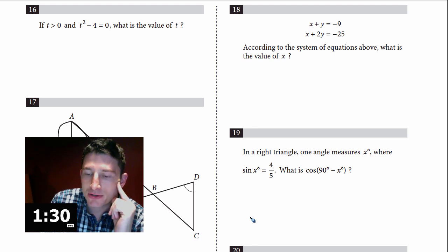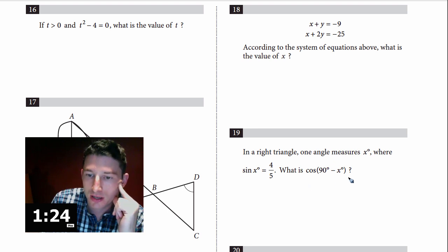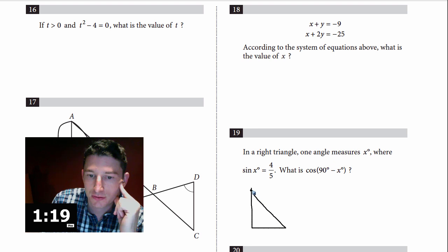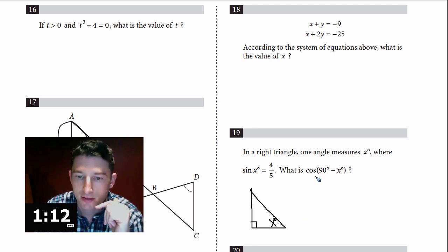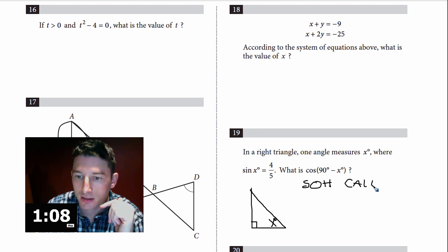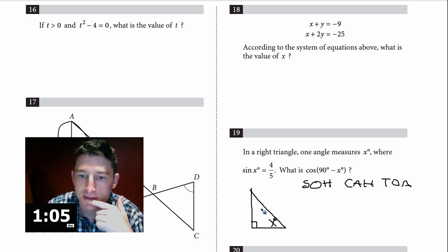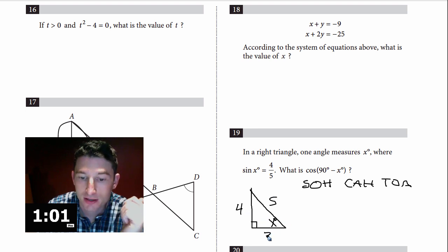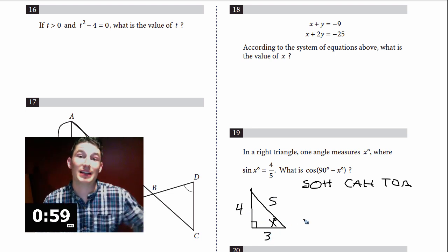Number 19: in a right triangle, one angle measures x where sine of x equals 4/5. What is the cosine of the other angle? Drawing a right triangle with angle x, remember SOHCAHTOA — sine is opposite over hypotenuse, so opposite = 4, hypotenuse = 5. You should know this is a classic Pythagorean triple: 3-4-5. So the adjacent side is 3.